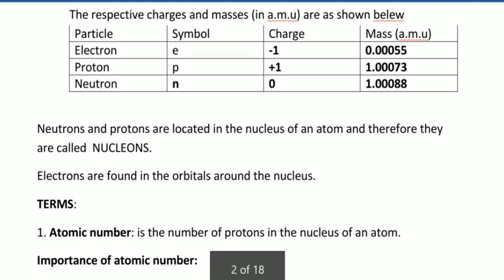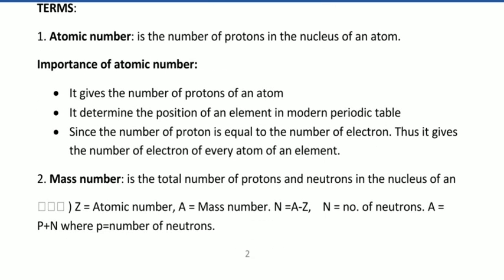In common terms, the first terminology is about atomic number. Atomic number is the number of protons in the nucleus of an atom. As I said earlier, it gives the number of protons. Atomic number equals number of protons. It determines the position of an element in the modern periodic table. Since the number of protons equals the number of electrons, it gives the number of electrons of every atom in an element.